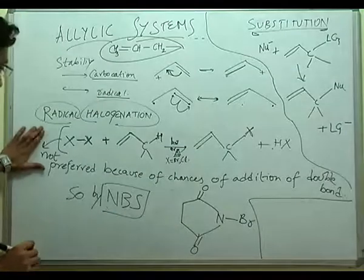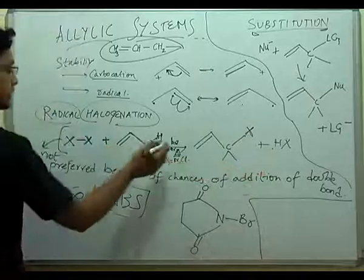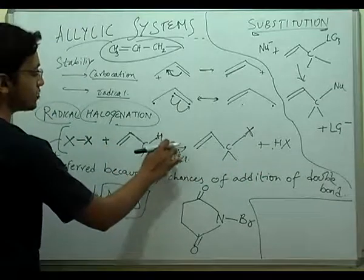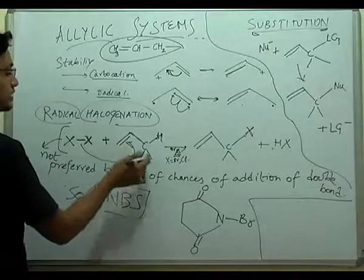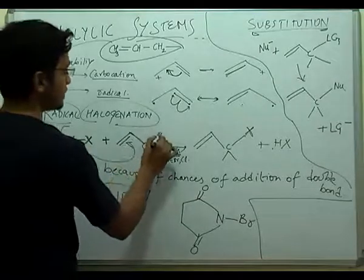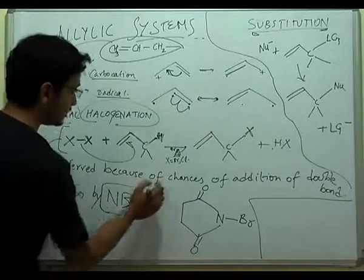This reaction is generally not preferred because of the chances of addition on the double bond. If light or heat is not provided then this will add upon the double bond instead of replacing this hydrogen. So we prefer NBS or N-bromosuccinimide for this type of reaction.